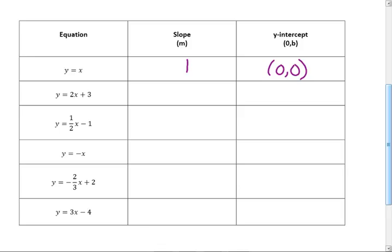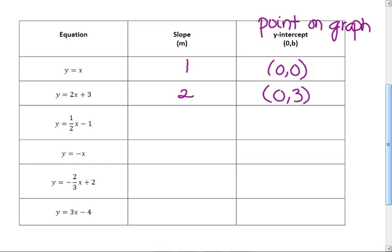What was the slope on problem 2? It was 2, and the y-intercept was 0, 3. It is an ordered pair. It is a point on the graph.